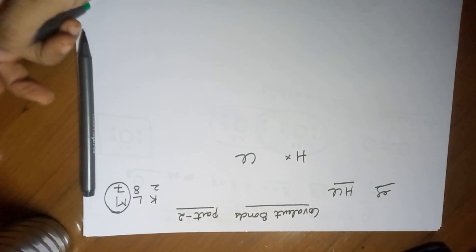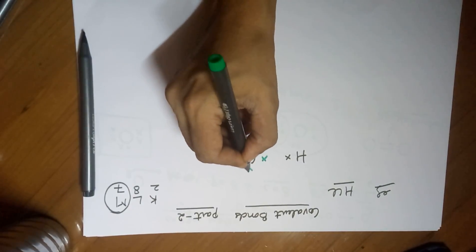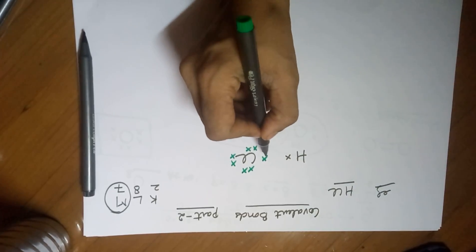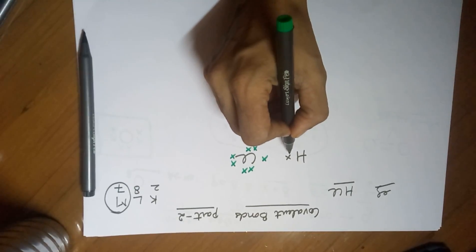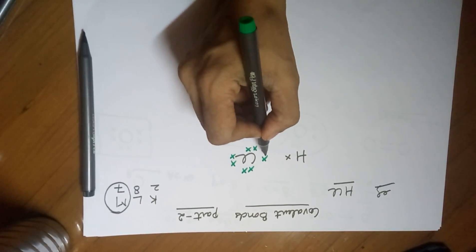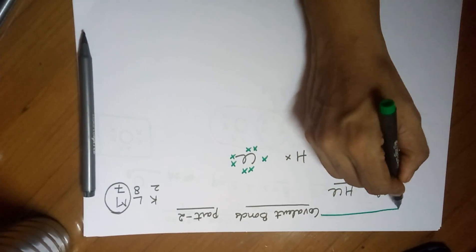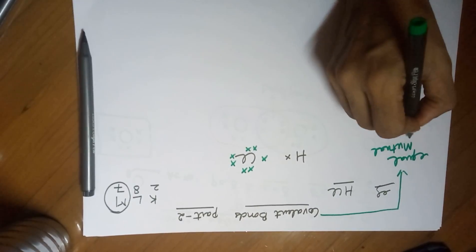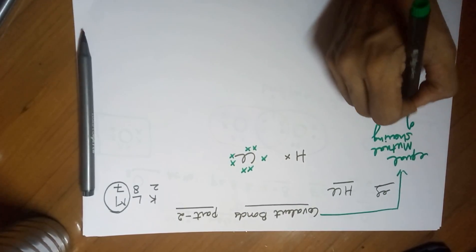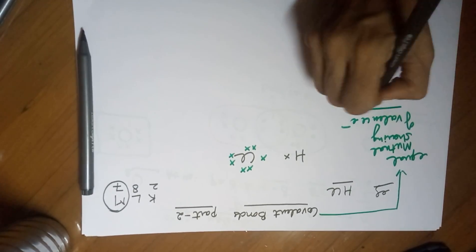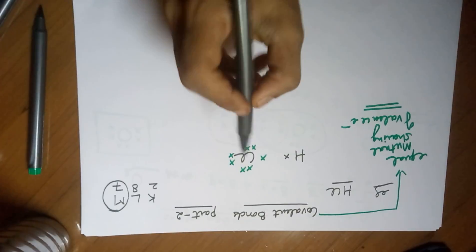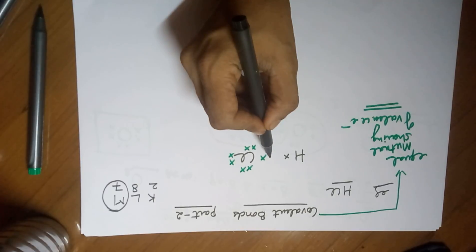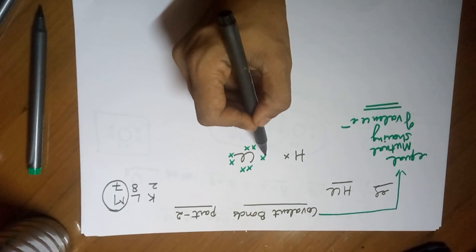So I write the valence electrons of chlorine as 7 electrons: 1, 2, 3, 4, 5, 6, 7. I deliberately wrote 1 electron on this side because hydrogen is capable of only sharing 1 electron, so chlorine can also share only 1 electron. The key is that covalent bonds must have equal mutual sharing of valence electrons. So 1 electron of hydrogen and 1 electron of chlorine can be shared.